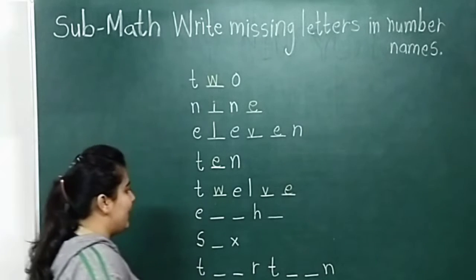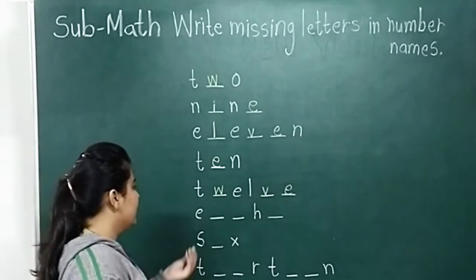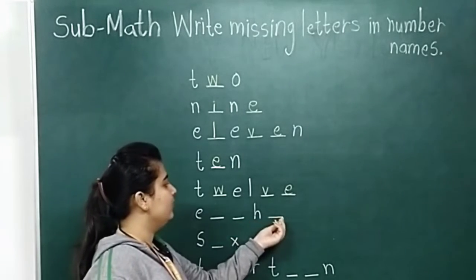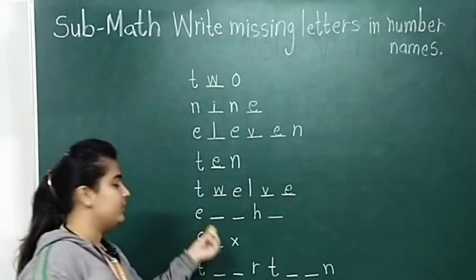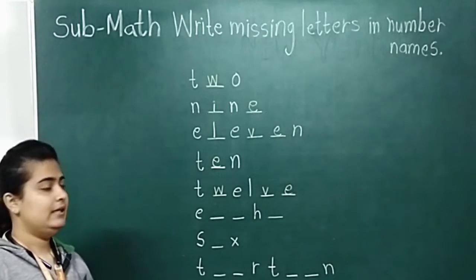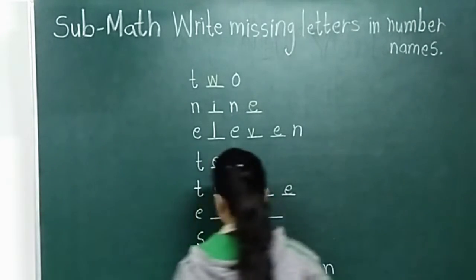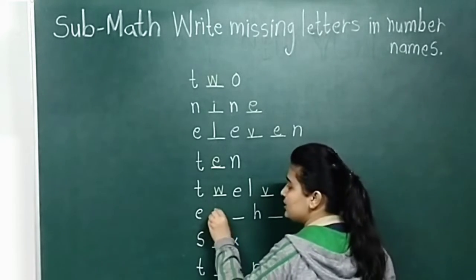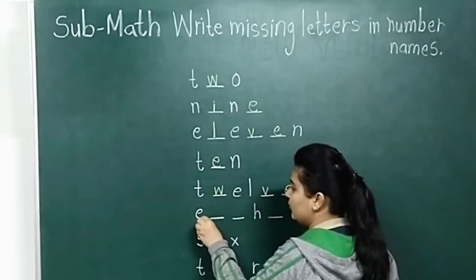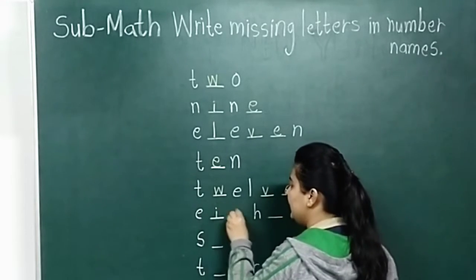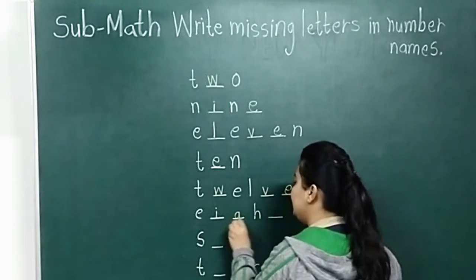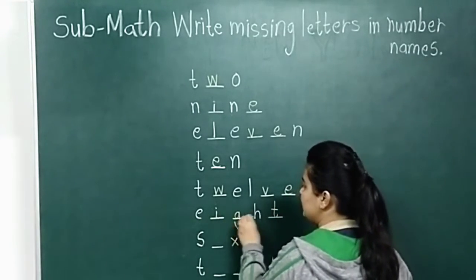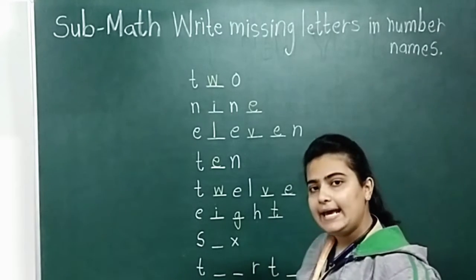Now next number name. E, dash, dash, H, dash, T. Which number name is this? Eight. E is written, so we write I, G. H is written, then T. E, I, G, H, T — eight.